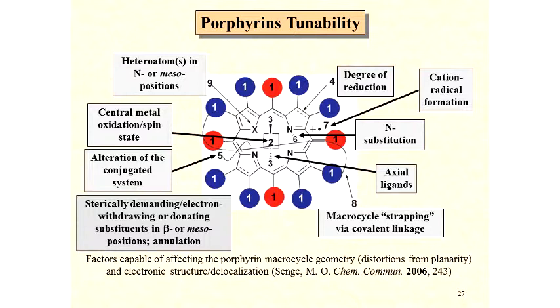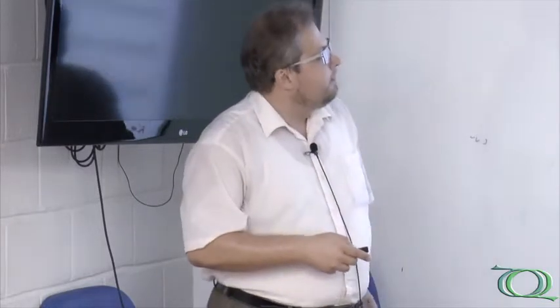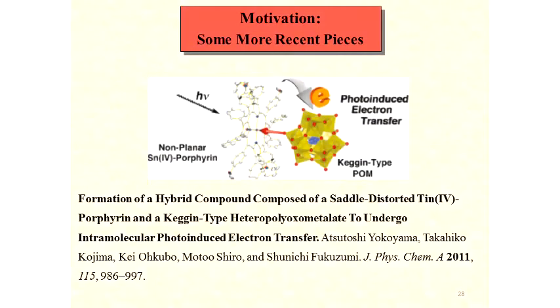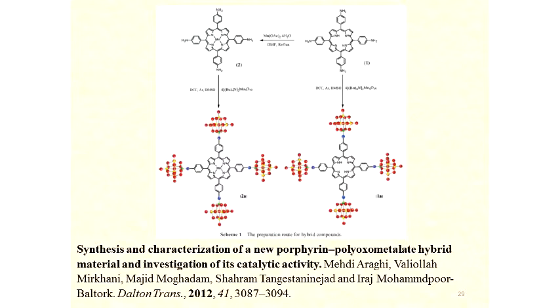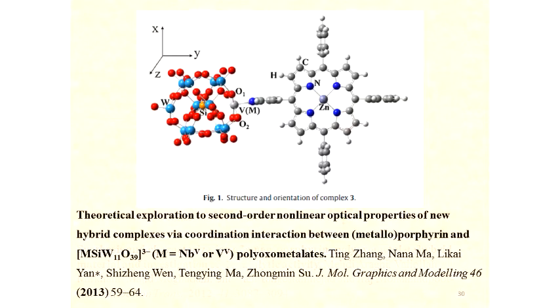This picture is a brief reminder of how structures and properties of porphyrins could be tuned. The potential for tuning structures and properties of complexes between polyoxometalates and metalloporphyrins is really immense. For more recent motivation: a report on charge transfer and photo-induced electron transfer between polyoxometalate and non-planar tin(IV) porphyrin.